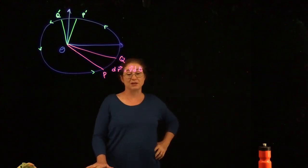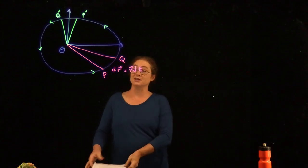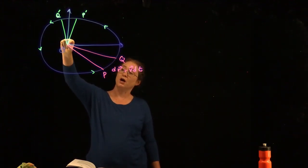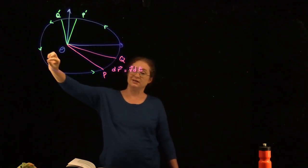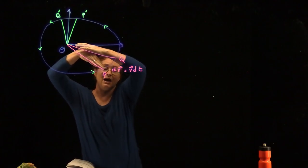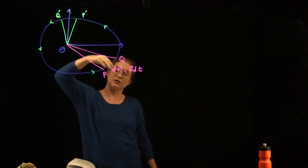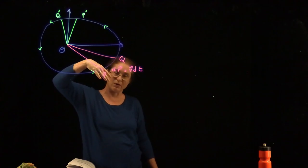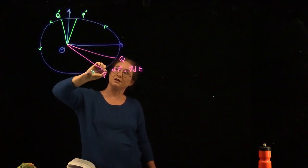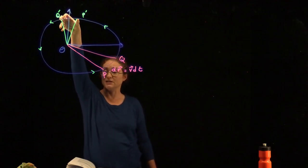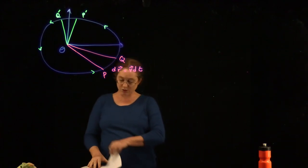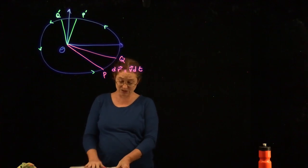Kepler's second law states that each planet sweeps out equal areas in equal times. Here I've recreated figure 3.7 from the book. You've got a planet in an elliptical orbit around the sun. In a fixed time interval, the area of the triangle swept out here equals the area swept out elsewhere along the orbit. We're going to figure out what that area is from the diagram.